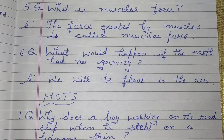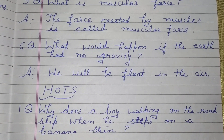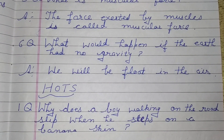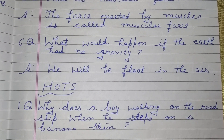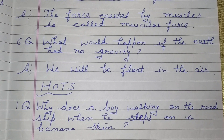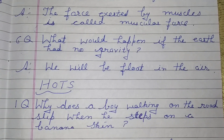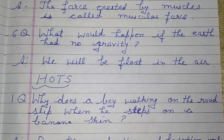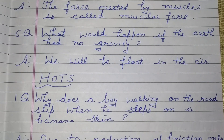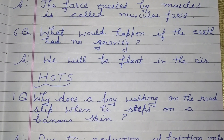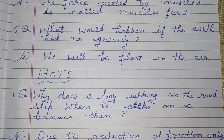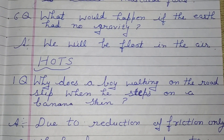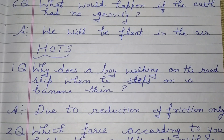Question number 6: What would happen if the earth had no gravity? Answer — We would float in the air. If there is no gravity on the earth, we will float in the air.